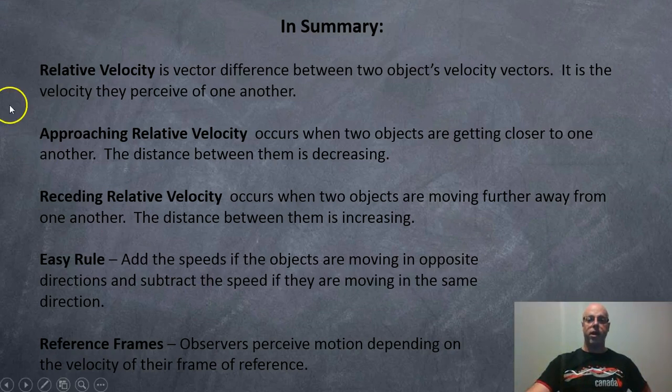So in summary, relative velocity is a vector difference between two objects' velocity vectors. Approaching means they're getting closer together, receding means moving further apart. And the easy rule is, if the objects are moving in the same direction, subtract the speeds. And if they're moving in opposite directions, add them. And a reference frame is just your point of view, your perception, based on your velocity.